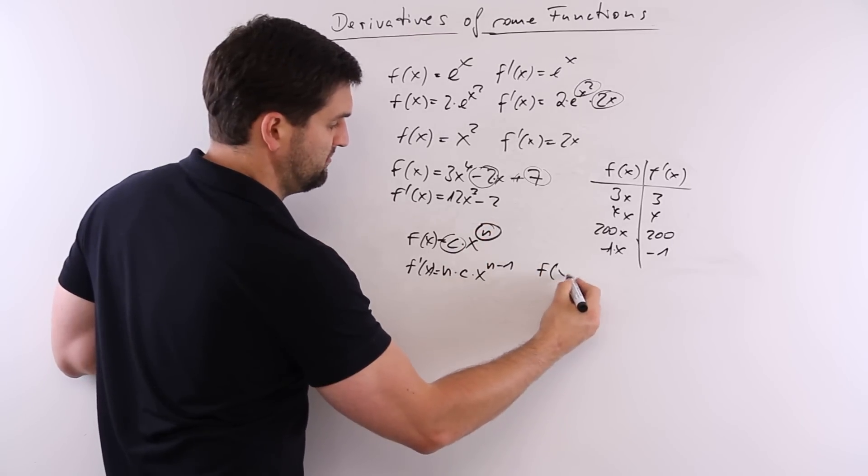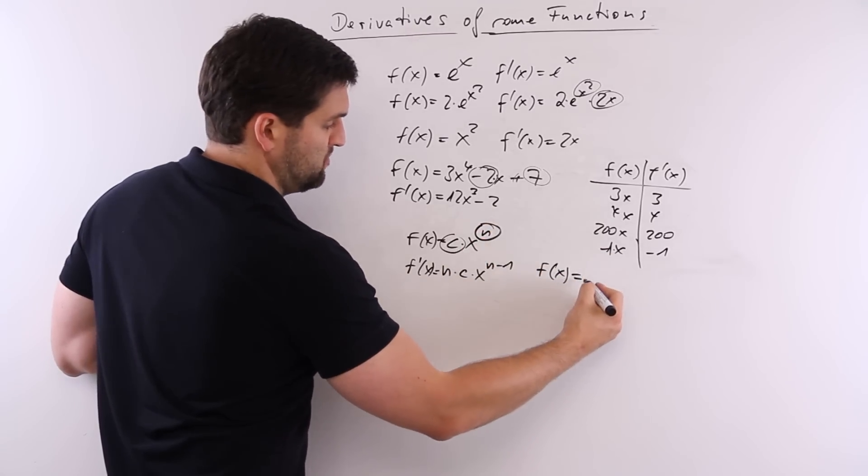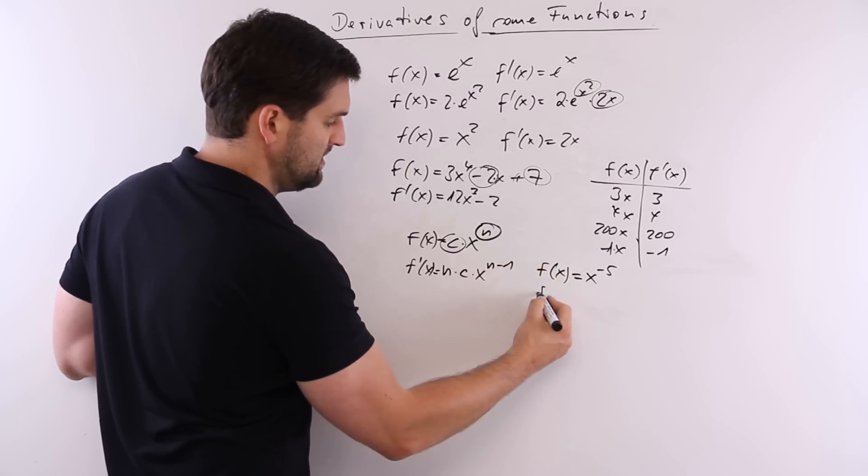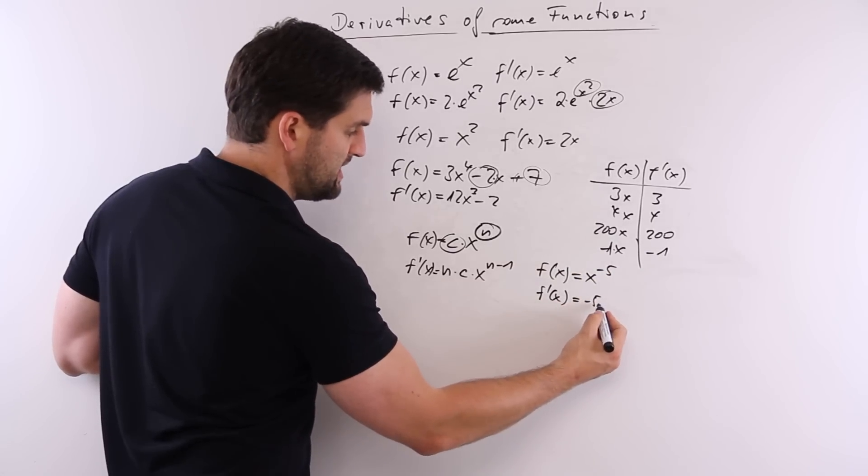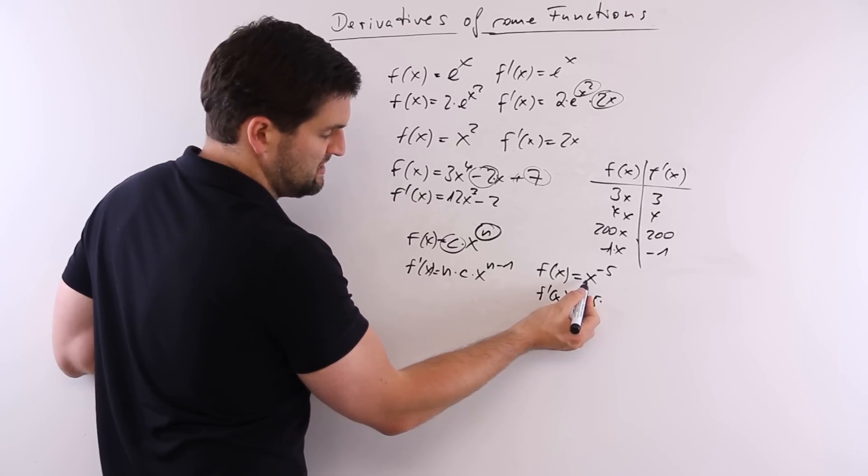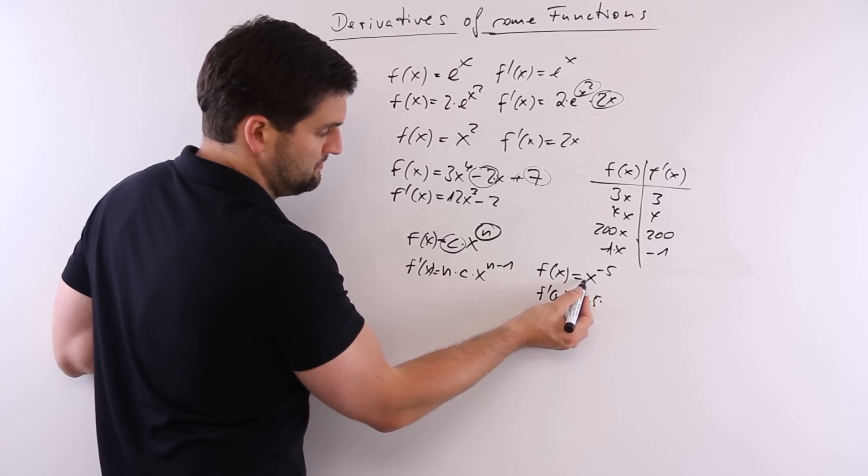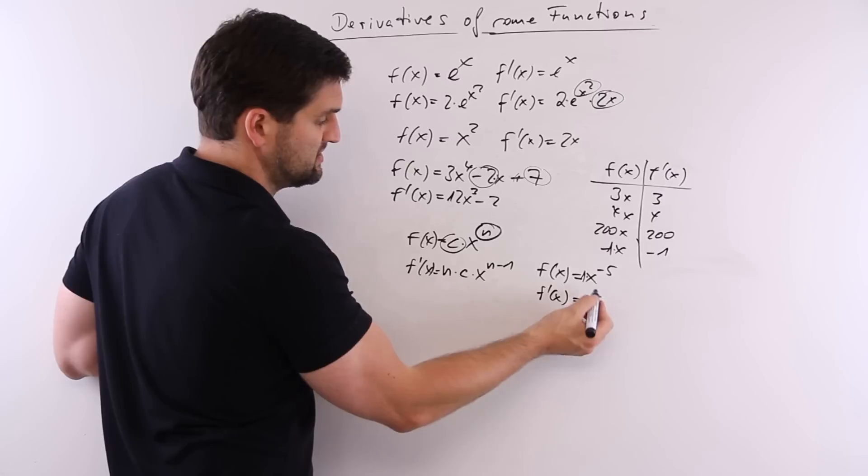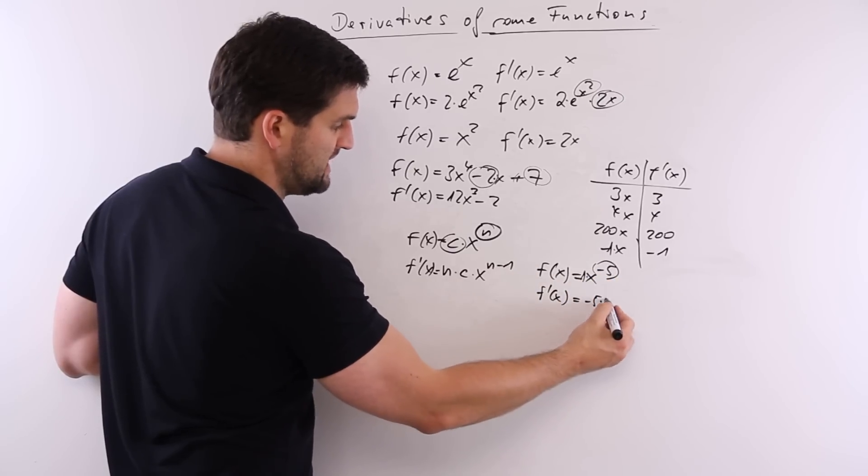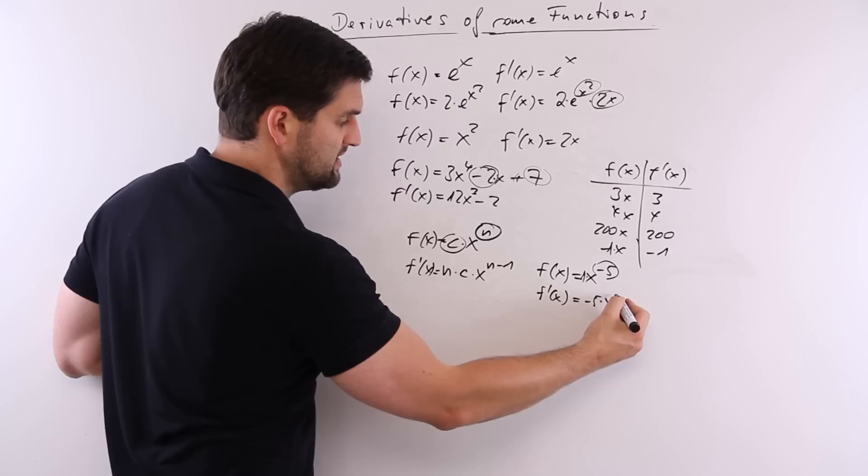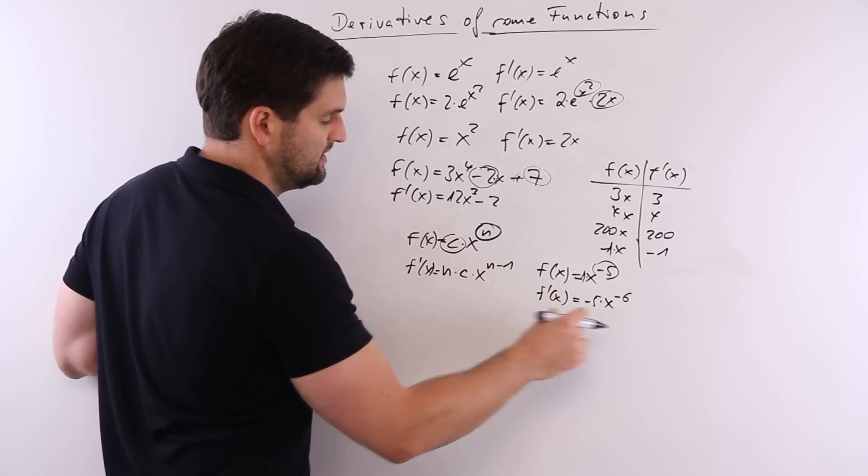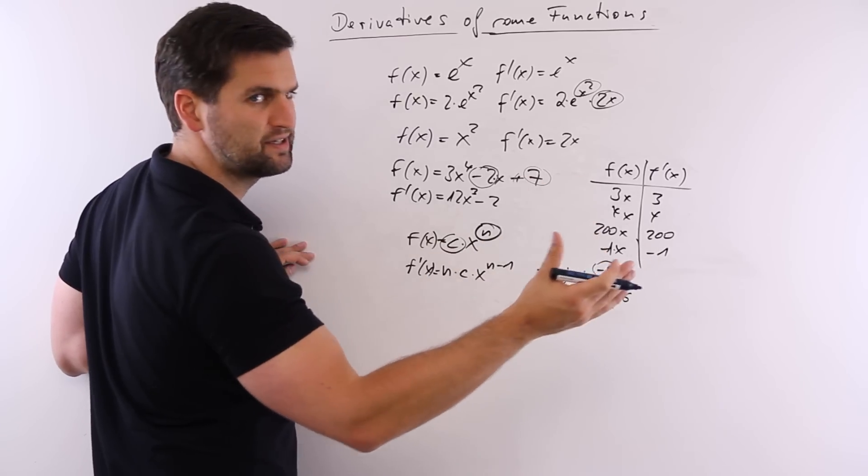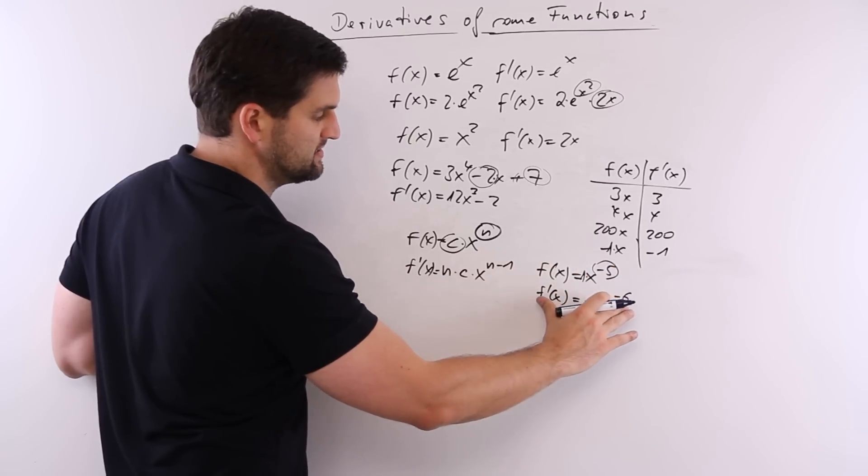Pay attention if you have f(x) would be like x to the power minus 5. The derivative would be minus 5 times... Some of you say here is nothing. It would be 1 times x to the power minus 5. So, minus 5 times 1 is minus 5 times x and minus 5 minus 1 is minus 6. A lot of people write down minus 4 because 5 minus 1 is 4. But it's minus 5 minus 1 is minus 6.